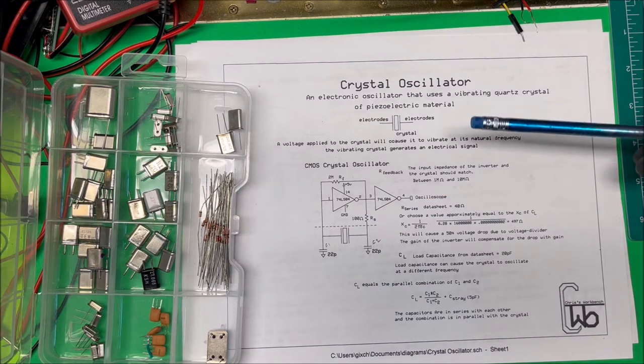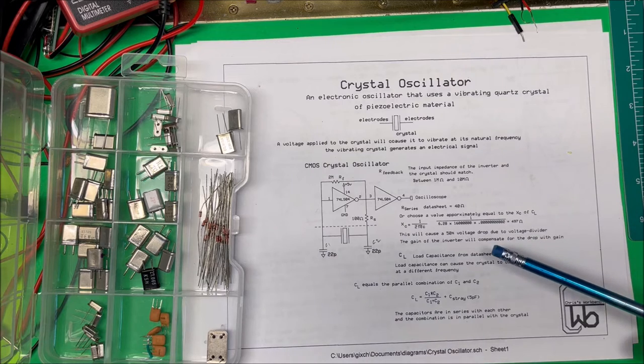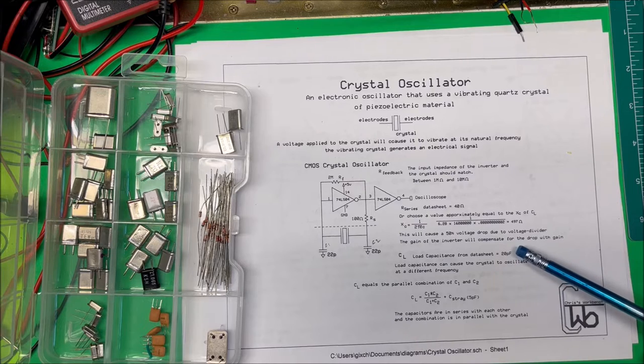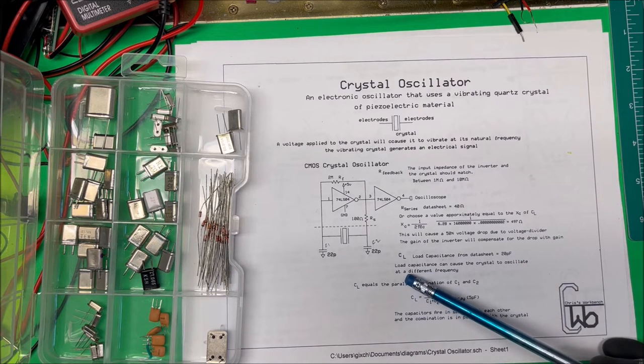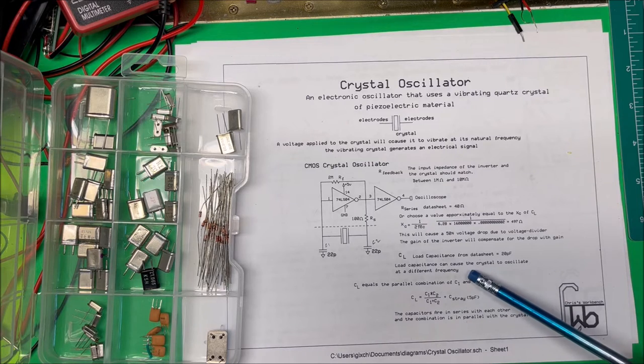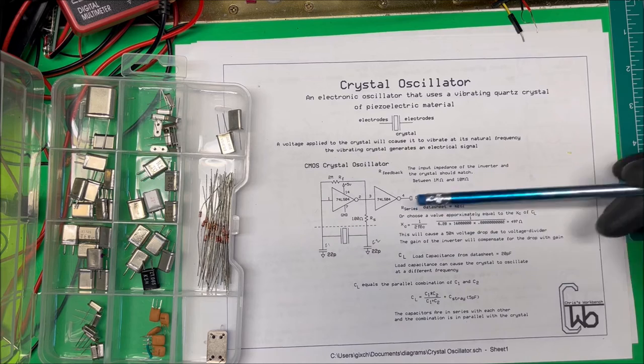Now the CL, this load capacitance here in the datasheet, says it's 20 picofarads. If you change the load capacitance, it can cause the crystal to oscillate at a different frequency. It can vary it a little bit. We're going to try that.